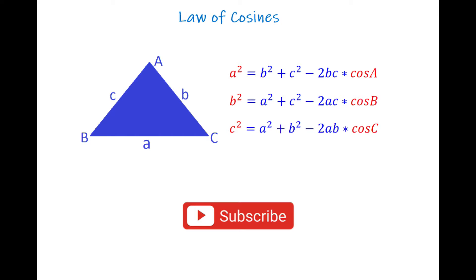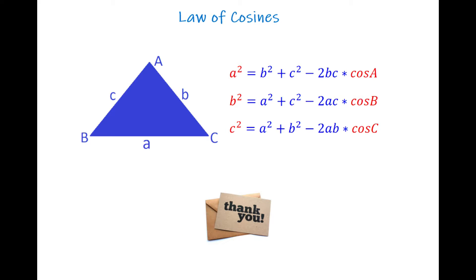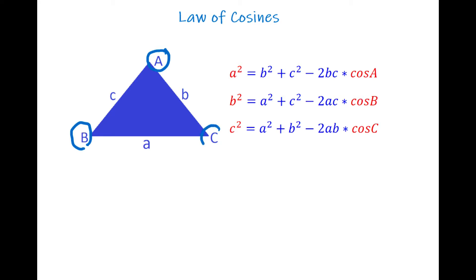Welcome to a new video. In this video I will show you the Law of Cosines. After illustrating the formula, I will solve three questions. Let's get started. Suppose we have a triangle: this point is A, that point is B, and that point is C. The side opposite angle C is called c, the side across from corner B is called b, and the side across from angle A is called a.